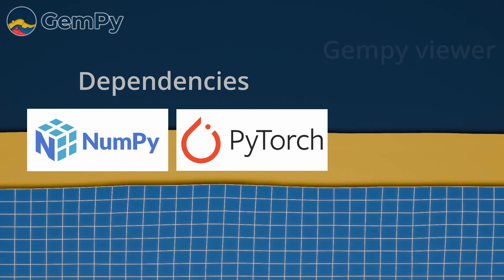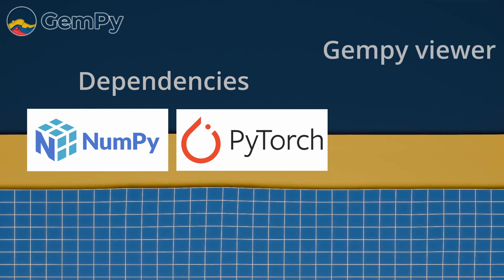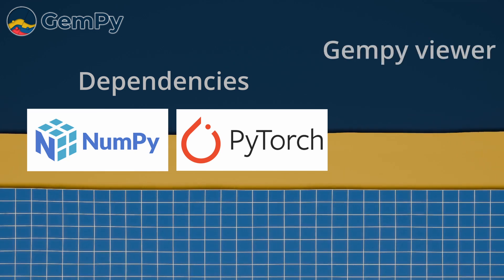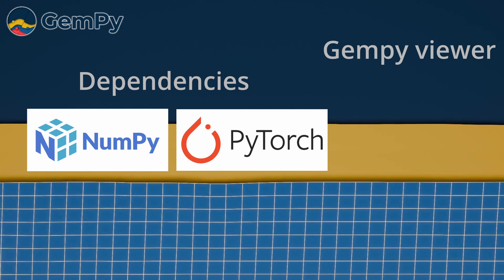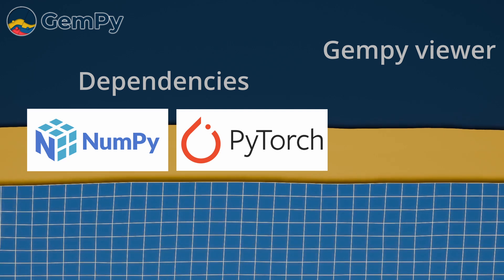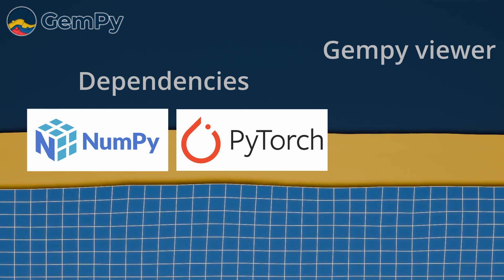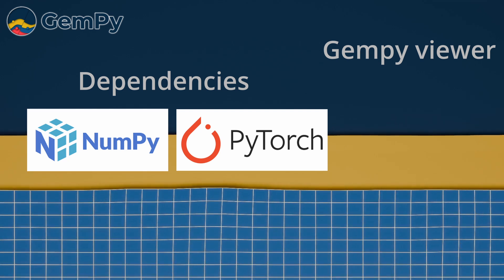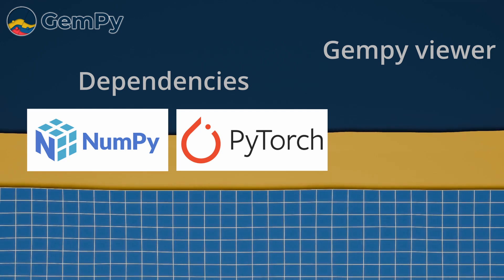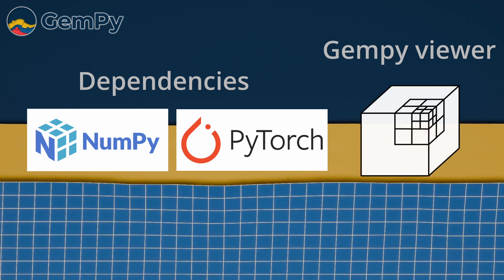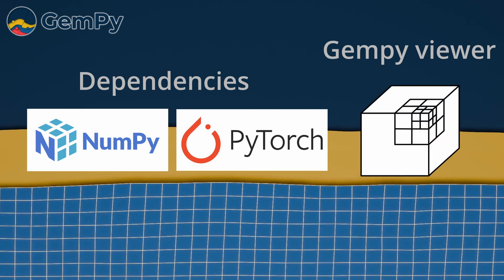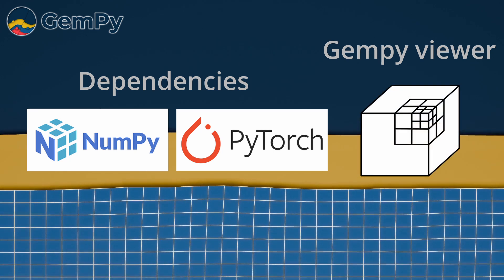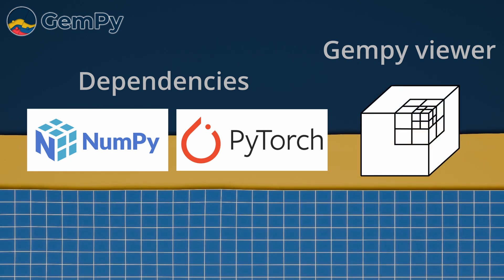Plotting functionalities are now in a separate package called GemPy Viewer. The package GemPy handles the API and documentation. There are some new features, including the implementation of Octree refinement for computation and dual contouring as an alternative to marching cubes for mesh generation.